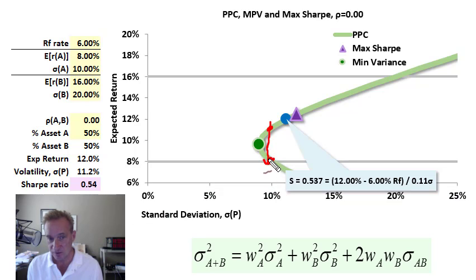The concave dominates every point in the convex segment because, for example, right about here, both of these portfolios give us about 10% standard deviation. But this one, on the concave segment, gives us a higher return for the same level of risk. So the concave segment dominates every point on the convex, and that is the efficient frontier. These portfolios are all efficient relative to these.